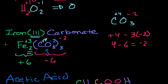That's why it's called iron(III) carbonate — iron is in its third oxidation state. Many metals, especially transition metals, can have multiple oxidation states. Iron(III) literally means iron's oxidation number in this molecule is +3.